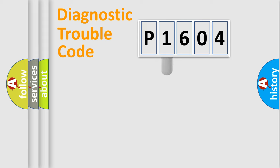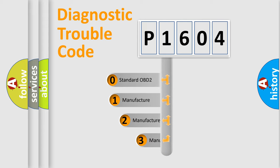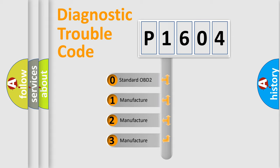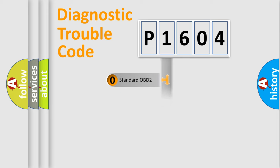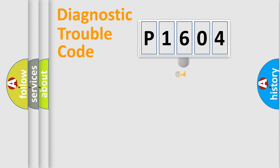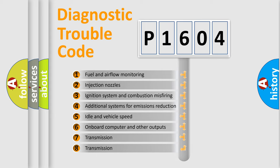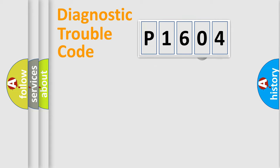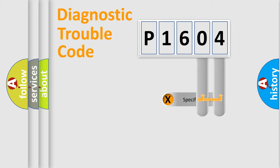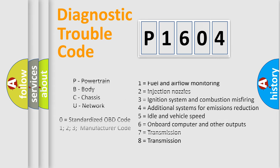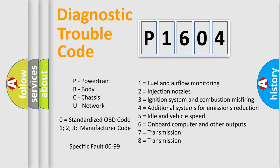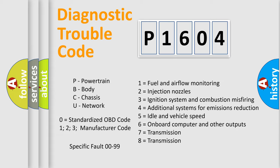This distribution is defined in the first character of the code. If the second character is expressed as zero, it is a standardized error. In the case of numbers 1, 2, or 3, it is a more specific expression of a car-specific error. The third character specifies a subset of errors, and only the last two characters define the specific fault of the group. This division is valid only if the second character is expressed by the number zero.